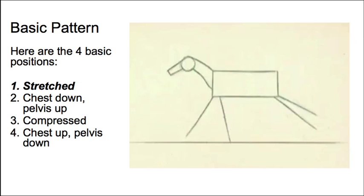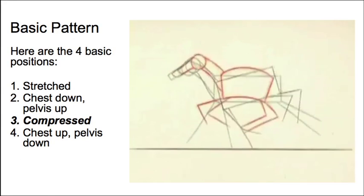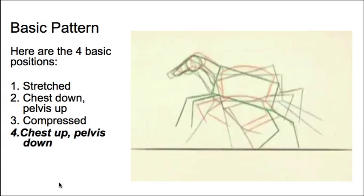Here they are in turn. Here's the horse stretched out, here's the chest down and the pelvis up, here's the compressed position — also where all four legs leave the ground — and there's the chest up position, pelvis down as the back legs contact.